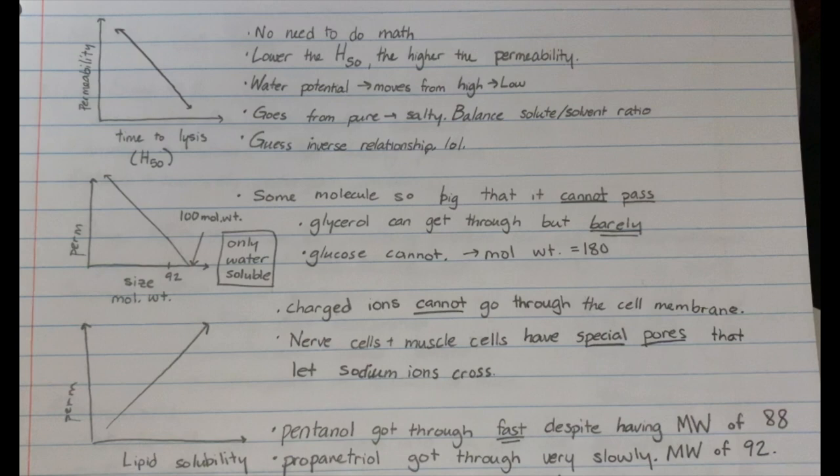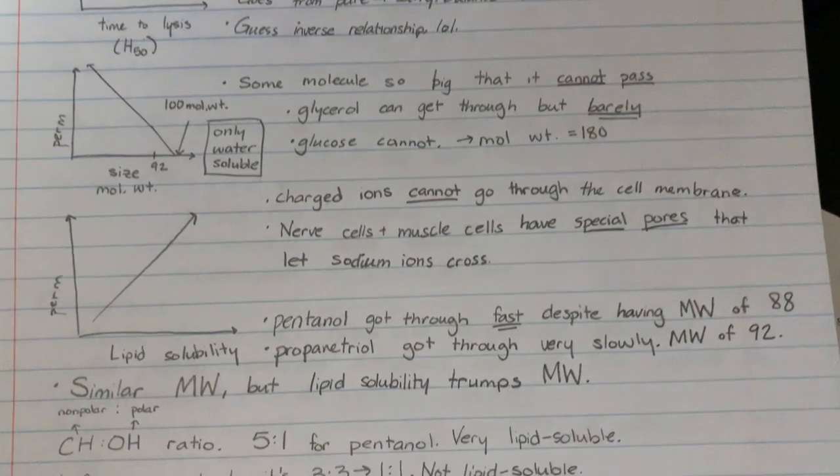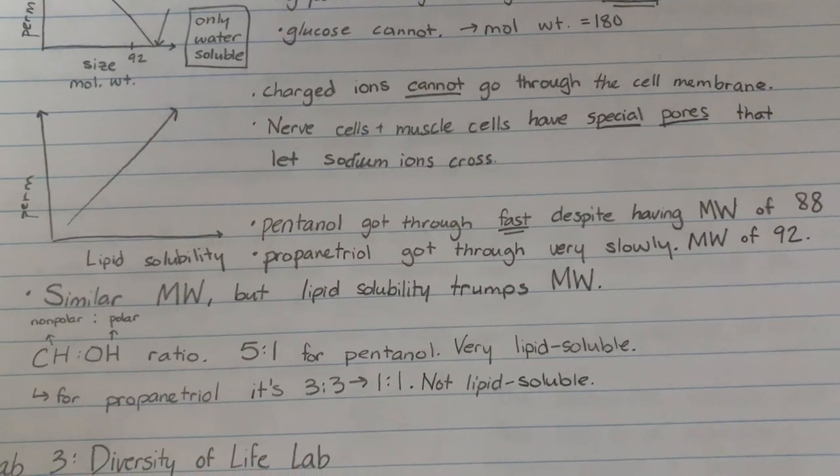As lipid solubility is the trump for that. You can have a very big molecule that can get through the membrane very quickly. In that example was pentanol. It got through very fast despite having a molecular weight of 88. Whereas propane trial got through very slowly because it was hydrophilic and has a molecular weight of 92. They have similar molecular weights, but lipid solubility ultimately trumps molecular weight. You don't need to know this by the way, but this is determined by the CHOH ratio of bonds. And for pentanol, this is 5 to 1, which means it's very lipid soluble. And for propane trial, it's 3 to 3 or 1 to 1, which means it's not very lipid soluble at all.